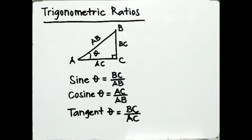There are three basic trigonometric ratios in a right triangle: sine, cosine, and tangent. In right triangle ABC, with angle θ (also angle A): sine θ is equal to the opposite side BC over the hypotenuse AB. Cosine θ is equal to the adjacent side AC over the hypotenuse AB. Tangent θ is equal to the opposite side BC over the adjacent side AC.